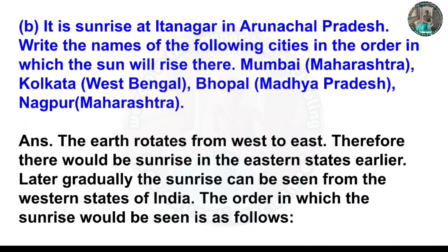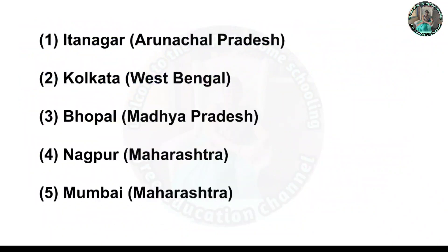The Earth rotates from west to east, therefore sunrise occurs in the eastern states earlier, and gradually the sunrise can be seen from the western states of India. The order in which sunrise would be seen is as follows: Itanagar first, then Kolkata, afterwards Bhopal, then Nagpur, and finally Mumbai.